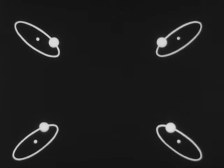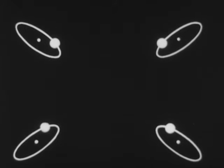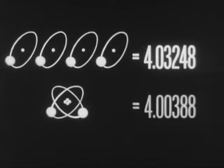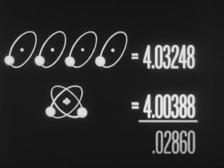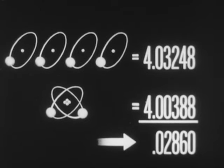By a complex process, under special conditions, this net change can take place. When it does, there is always a loss of weight. Four hydrogen atoms weigh a certain amount in mass units; the helium atom weighs less. This weight is lost in the process of combination.